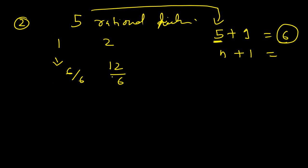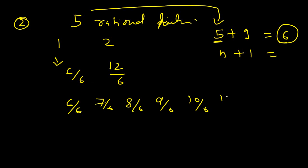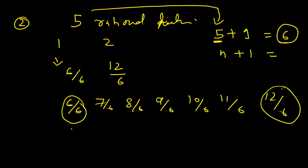So, 6/6 is nothing but 1, and 12/6 is nothing but 2. Now, we can easily find the rational numbers between these two. We have 6/6, so the next numbers will be 7/6, 8/6, 9/6, 10/6, 11/6, and 12/6. These 5 rational numbers — 7/6, 8/6, 9/6, 10/6, 11/6 — lie between 1 and 2. Notice the denominators are all the same; it is only the numerators which are different, lying between 6 and 12. This is another way of finding rational numbers between two given rational numbers. Thank you.